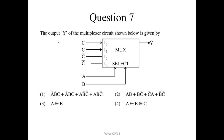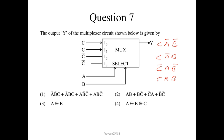Question number 7. The output Y of the multiplexer circuit shown is given by the following. There are two select lines, so there are four possible combinations: A̅B̅, A̅B, AB̅, and AB. The inputs i0 is multiplied by A̅B̅, C is multiplied by A̅B (i1), C̅ is multiplied by AB̅ (i2), and C̅ is multiplied by AB. Adding all these terms gives the output expression. Option 1 is the correct answer.